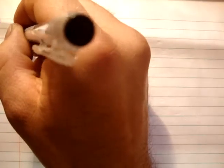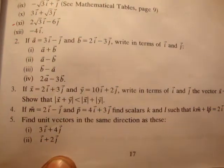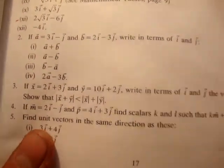Okay, in this video I'm going to continue with exercise 1b of fundamental applied mathematics. So here's the question at the bottom there: find unit vectors in the same direction as these, and it gives you two vectors.